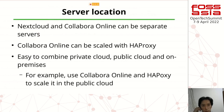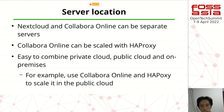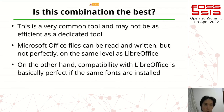Nextcloud and Collabora Online can be on separate servers. Collabora Online can be scaled with an HA proxy. It's easy to combine private cloud and public cloud or on-premise. For example, you could use Collabora Online with elastic scaling in the public cloud.